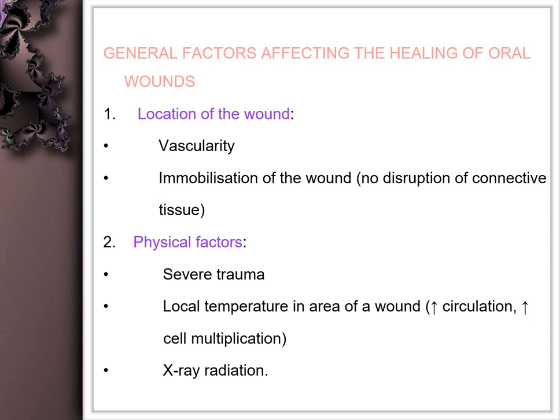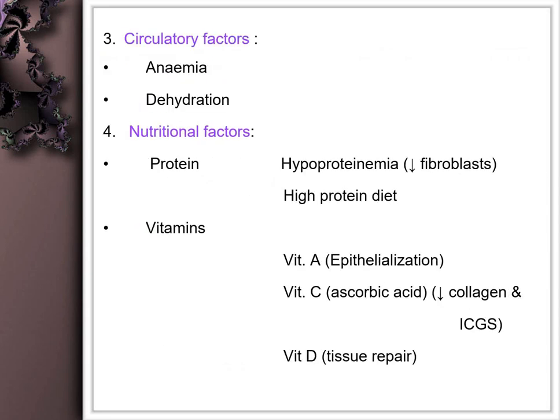Physical factors — including severe trauma, increase in local temperature, and X-ray radiation — also affect healing of oral wounds. The more severe the trauma, the more delayed the healing. Hyperthermia increases circulation, giving rise to better healing. Low-dose irradiation is known to cause better healing. Circulatory factors like anemia can cause delay in healing, as can dehydration. Better protein intake increases wound healing capacity.